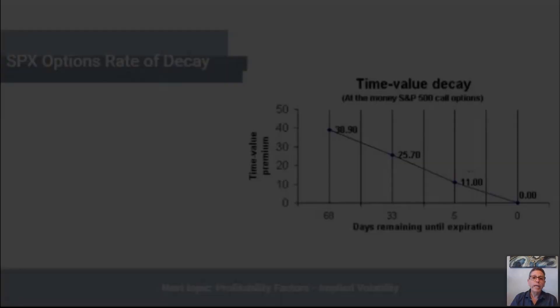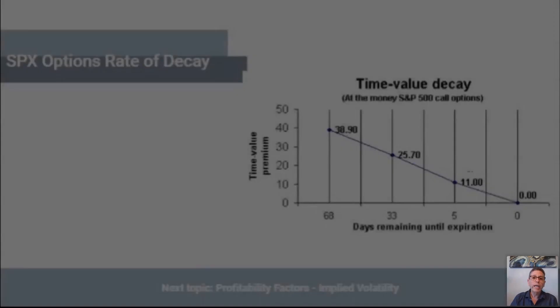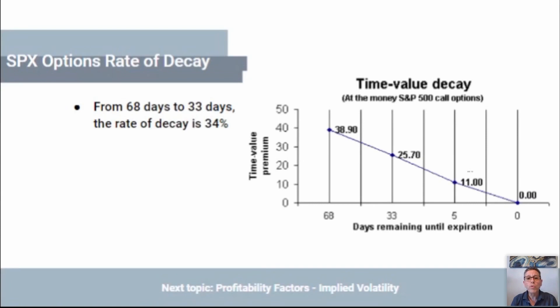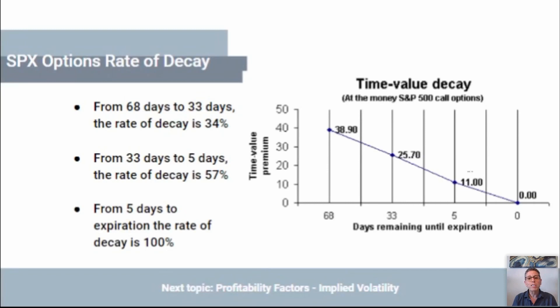Let's talk about one of the major profitability factors — the decay of options. This is a call option and the journey it takes over its life. From 68 days to 33 days, the rate of decay is 34%. From 33 days to 5 days, the rate of decay is 57%. And from 5 days to expiration it's 100%. You can imagine at 5 days to expiration going down to zero, that decay rapidly drops in value — and it's the fastest way to gain income in a decaying scenario for credit spreads.